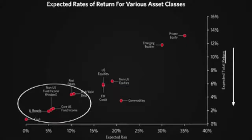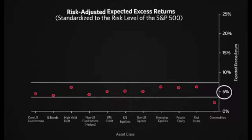The second thing to understand is that asset classes carry different returns and different risks. Inflation-linked bonds have the lowest risk and lowest return, and then if you go higher you have equities, emerging markets equities, and private equity with the highest volatility but also the highest returns. However, if you adjust for risk, then every asset class gives you a return between four and seven percent, which is not bad over the long term.